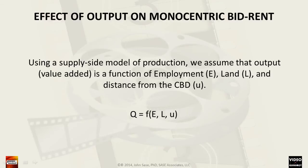In this model, we assume that the value added in the form of output is a function of three determinant variables. These variables include large E, the level of employment in the sub-center; large L, the quantity of land used to produce the sale of automobiles; and mu, the distance of this sub-center location from the central business district, the CBD. In short, quantity of production sold equals a function of employment, land, and radial distance.